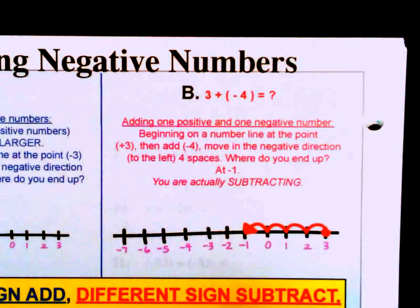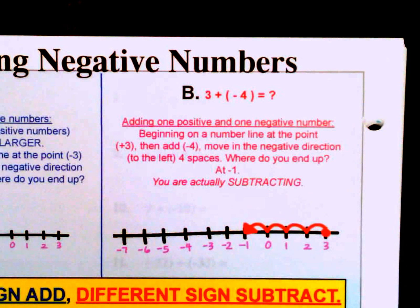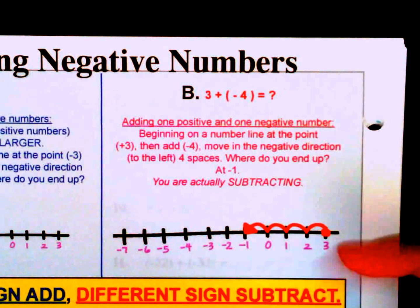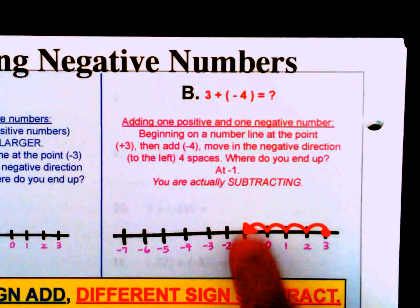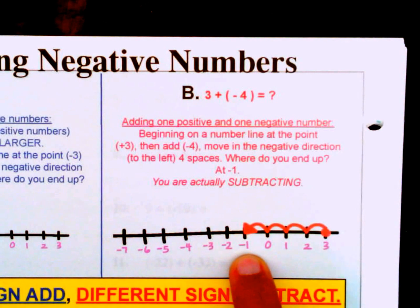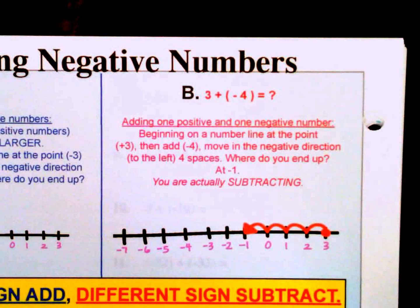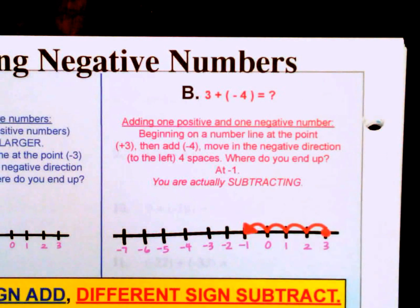Example B: 3 plus negative 4. We have one positive and one negative number. Starting at 3 on the number line, even though we're adding, it's a negative number so we go in the negative direction — minus 4 — and we end up at negative 1. We're actually finding the difference between 4 and 3, which is 1. The bigger number is negative, so the answer is negative.